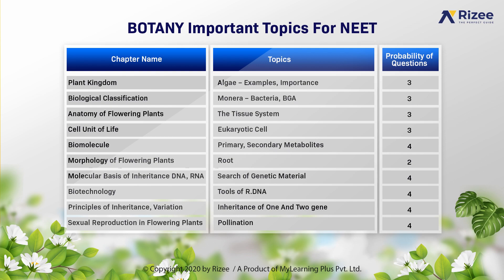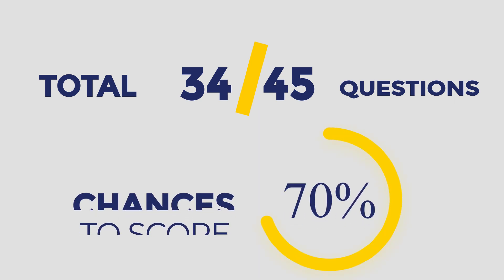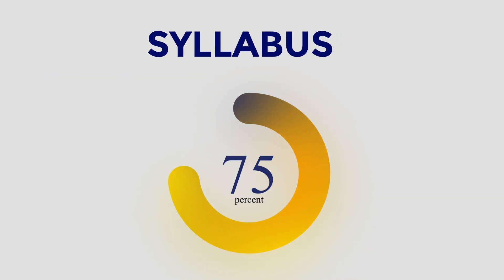In chapter biotechnology, important topic is tools of recombinant DNA. And probability of questions are 4. Next, principles of inheritance and variation — in that, inheritance of one and two genes topic is very very important. And the probability of questions asked are 4. In sexual reproduction in flowering plants, important topic is pollination. And probability of questions asked are 4. So in botany, total 34 questions of 45 are being given. So more than 75% chance of scoring, as 75% syllabus is covered from these 10 important topics.